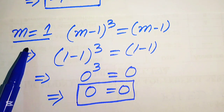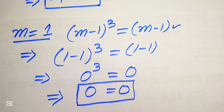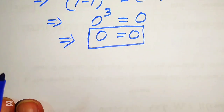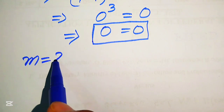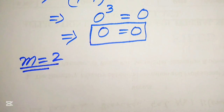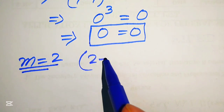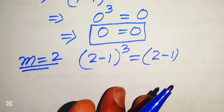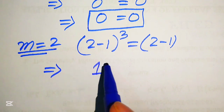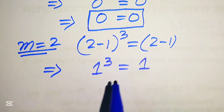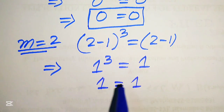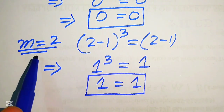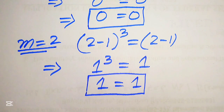For m = 2: substituting gives (2 - 1)³ = 2 - 1, so 1³ = 1, and 1 = 1. This confirms m = 2 also satisfies the equation. The final answers are m = 0, m = 1, and m = 2. Thank you for watching — please subscribe for more exciting videos.